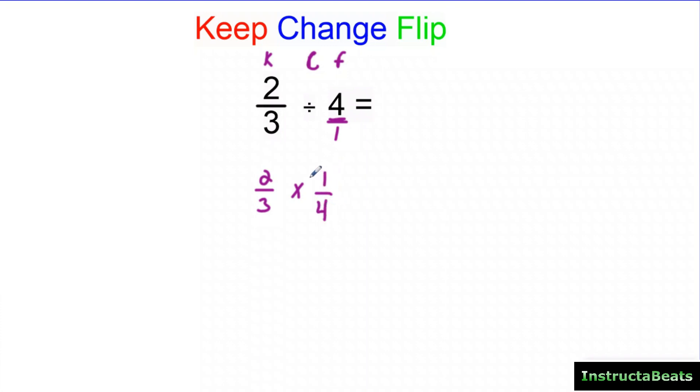All right. Reciprocal basically just means when we're going to flip the fraction, the numerator and denominator switch. And now we can just multiply across, right? We're just multiplying a fraction. So two times one is two, three times four is 12. So we have two twelfths, or you can divide by a common factor and simplify that to one sixth.